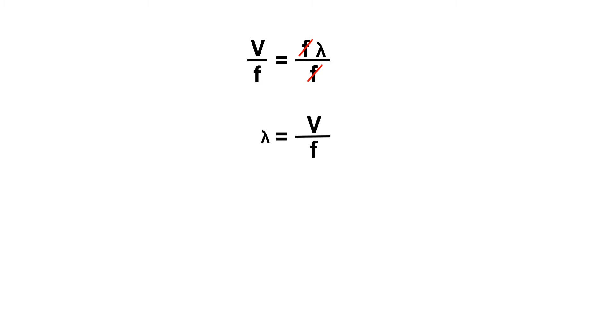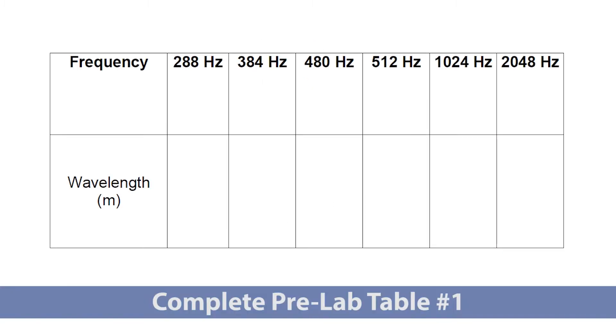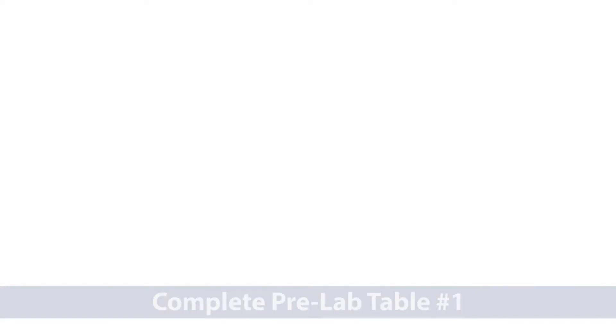Use the estimated speed of sound of 340 meters per second to determine wavelength for each frequency starting with 288 hertz. Pause the video and complete the first pre-lab table.